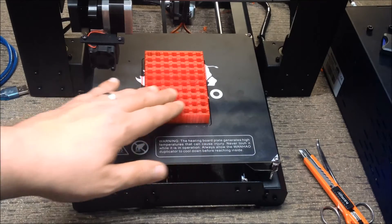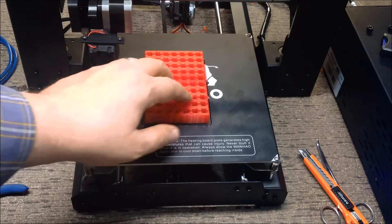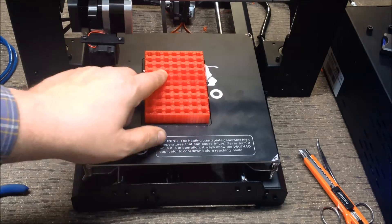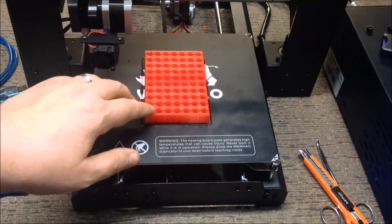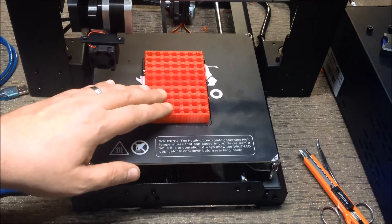We've printed out some test objects for a camera slider, and then we've printed out a hex tool. And now, we've decided to continue on and print out a larger piece, a hex tool holder.